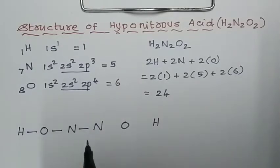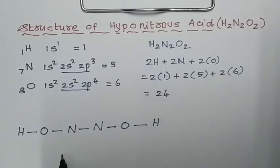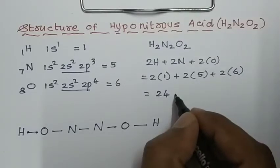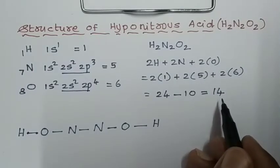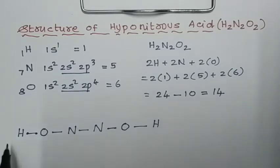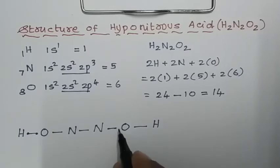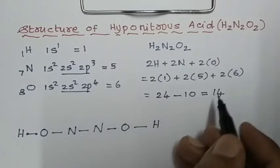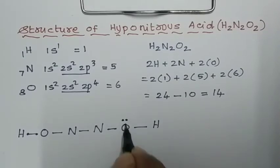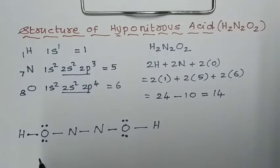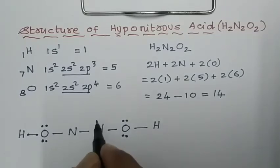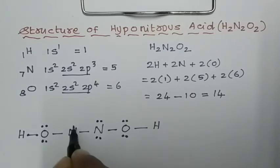Join all atoms by a single bond. Each bond contains 2 electrons, and with 5 single bonds we use 10 electrons. Subtracting from 24, we have 14 electrons remaining to fill as lone pairs. Since oxygen is more electronegative, the lone pairs on oxygen atoms are filled first — 3 lone pairs per oxygen, using 12 electrons. The remaining 2 electrons go on nitrogen.